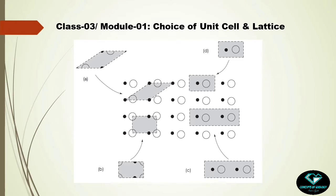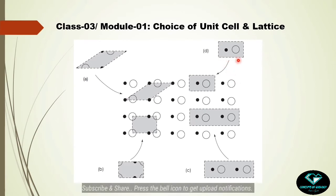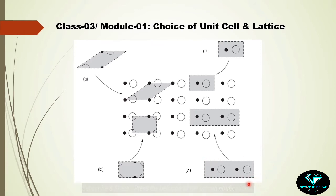Now we know the symmetry, so it's time to find the unit cell. The first choice contains one complete motif — one black dot and one open circle surrounded by a certain area of empty space. When this repeats, it creates the full pattern. A second choice takes two motifs — two black dots and two open circles — with a doubled surrounding area, which can also recreate the structure.